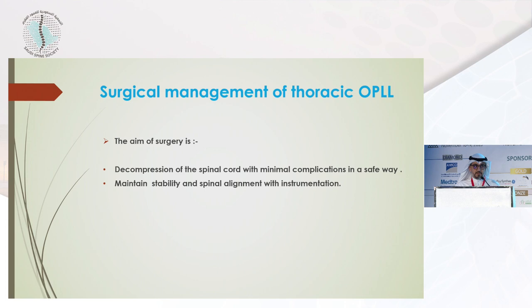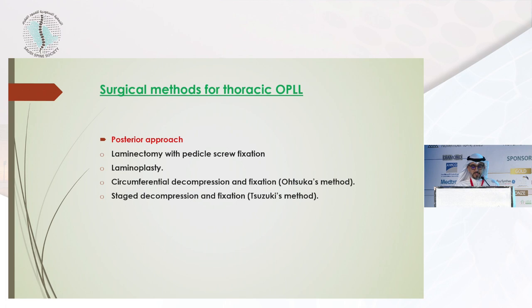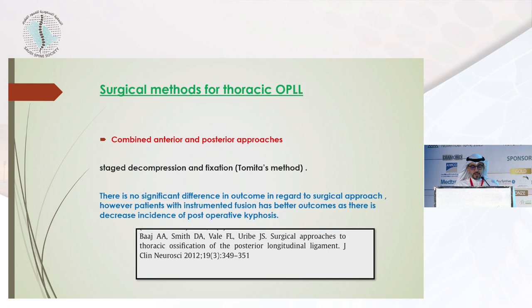Surgical methods for thoracic OPLL include the anterior approach — decompression and stabilization via longitudinal splitting of the sternum for T1 to T3, thoracotomy for T4 to T12, and anterior decompression under microscopy. For the posterior approach, we have laminectomy with pedicle screw fixation, laminoplasty, circumferential decompression and fixation (Otsuka method), and staged decompression and fixation (Suzuki method). For combined anterior and posterior, there is the Tomita method. One study showed no significant difference in outcome by surgical approach; however, patients with instrumented fusion had better outcomes due to decreased incidence of postoperative kyphosis.